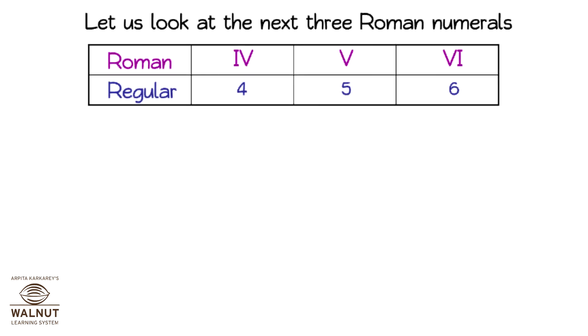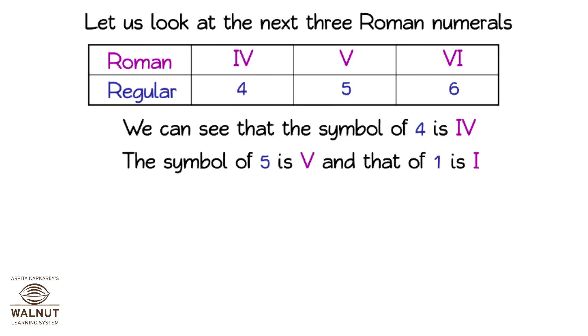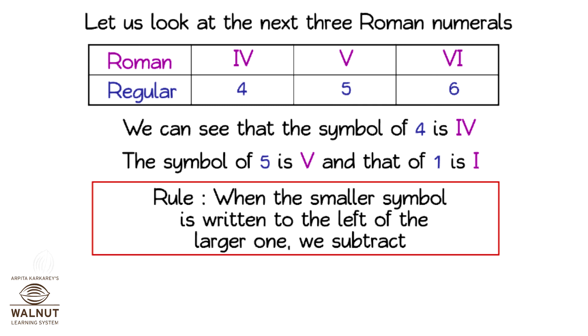Let us look at the next three Roman numerals. We can see that the symbol of 4 is IV. The symbol of 5 is V and that of 1 is I. When the smaller symbol is written to the left of the larger one, we subtract. So, IV means 5 minus 1 is equal to 4.